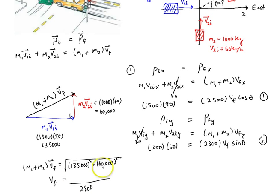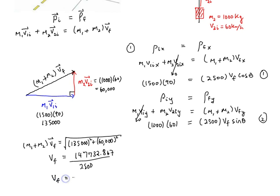So, that top part reduces to 147732.867, and you can calculate that on your calculator to get v final of 59.1 kilometers per hour.